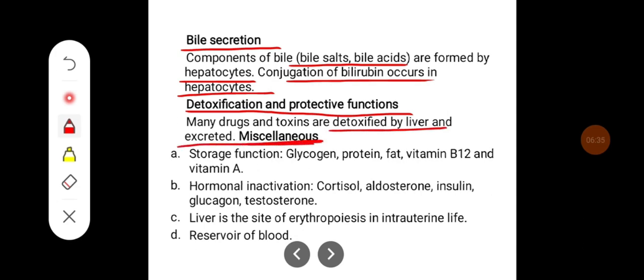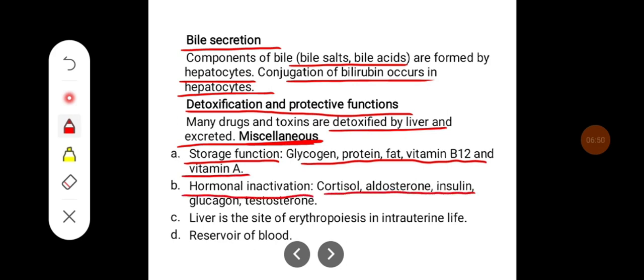Some of the other functions of the liver include storage functions — glycogen, protein, fats, vitamin B12, and vitamin A are stored in the liver. It also helps in inactivation of some hormones like cortisol, aldosterone, insulin, glucagon, and testosterone. The liver is also a site for erythropoiesis in intrauterine life.